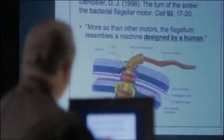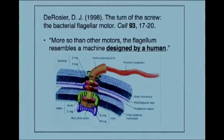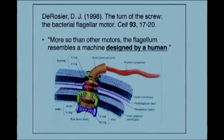In 1998, a man named David Derosier wrote an article in the journal Cell, a very prestigious scientific journal, entitled 'The Turn of the Screw: The Bacterial Flagellar Motor.' David Derosier is a professor of biology at Brandeis University and has worked on the bacterial flagellar motor for most of his career. In that article, he states: 'More so than other motors, the flagellum resembles a machine designed by a human.' So Derosier also recognizes that the structure of the flagellum appears designed.